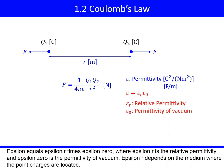Epsilon equals epsilon r times epsilon 0, where epsilon r is the relative permittivity and epsilon 0 is the permittivity of vacuum.